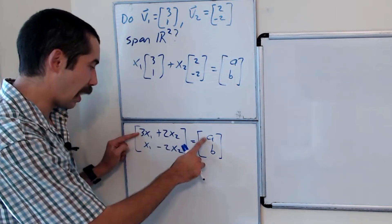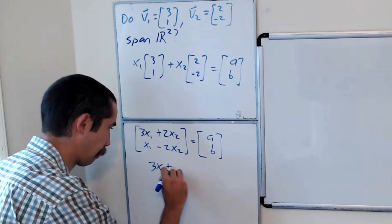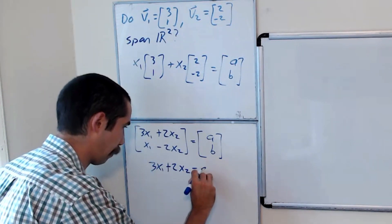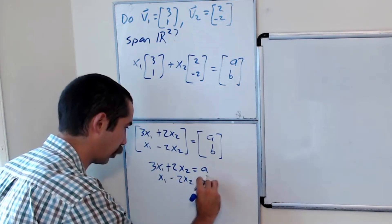So we have 3x1 plus 2x2 equals a, and x1 minus 2x2 equals b.